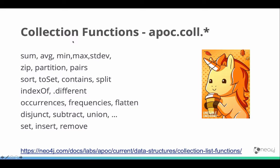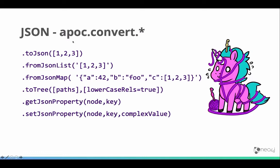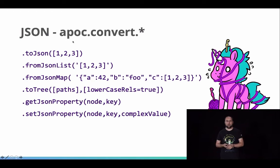My personal favorites are map functions. You can create maps with APOC from any kind of data structure — from two lists, from lists of pairs. You can merge maps together and clean maps, which is really useful for data imports: you can specify keys and values to skip and remove from a map, so only the clean result map is set as properties on a node or relationship. APOC map group-by is very powerful if you have a larger data set in a list and want to group it by a property or key, giving you either a single map or a multi-map that can be used as a lookup cache. We also have JSON conversion functions to turn JSON into strings and strings into JSON, and render a list of paths from Cypher into a nested tree structure as JSON.